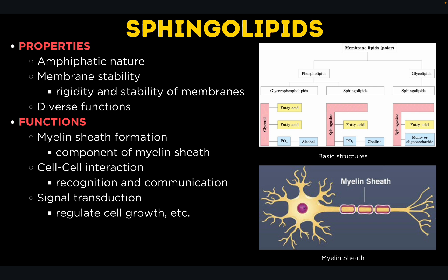The most important function of sphingolipids would be myelin sheath formation. They are critical components of the myelin sheath, the insulating layer that surrounds nerve axons in the central nervous system, and are very important in the transmission of electrical signals. They also play a role in cell-to-cell interaction, including recognition and communication in neural tissues and immune responses. Additionally, they function in signal transduction, participating in signaling pathways that regulate cell growth, differentiation, and apoptosis — which is programmed cell death.